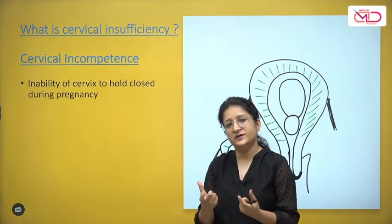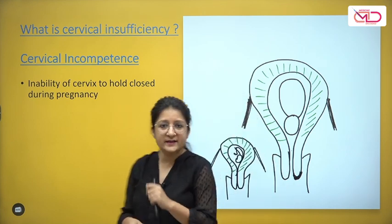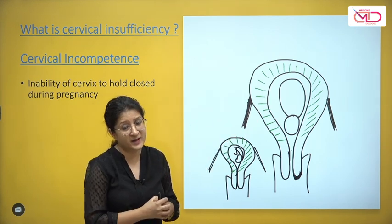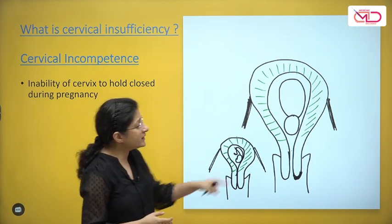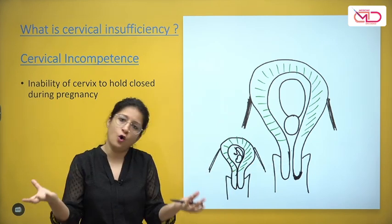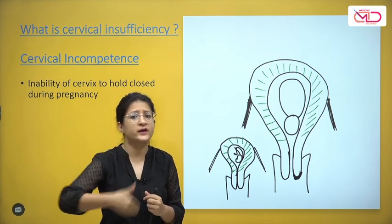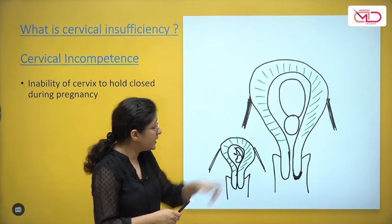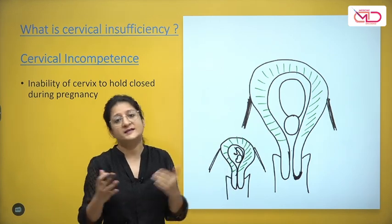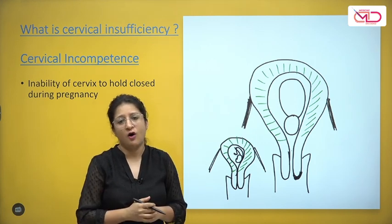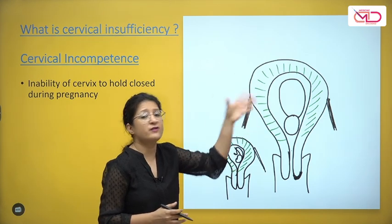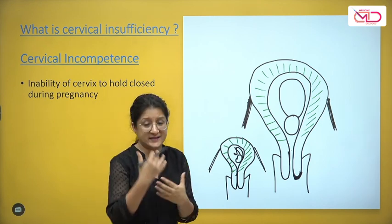In the case of cervical incompetence, there is an inability of the cervix to hold tight. As the pregnancy progresses, the baby grows and becomes heavier, the contents of the uterus become heavier, and it becomes difficult for the cervix to maintain closure. The cervix spontaneously opens up — without any signs of labor, without any bleeding, without uterine contractions — leading to expulsion of the fetus. This mostly occurs from the second trimester onwards, leading to recurrent second trimester pregnancy losses or recurrent preterm births.